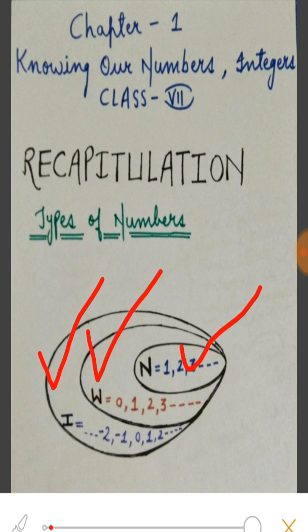There is no end to these numbers. They go on up to infinity. Or in short, we can say all whole numbers along with the negative numbers are called Integers.